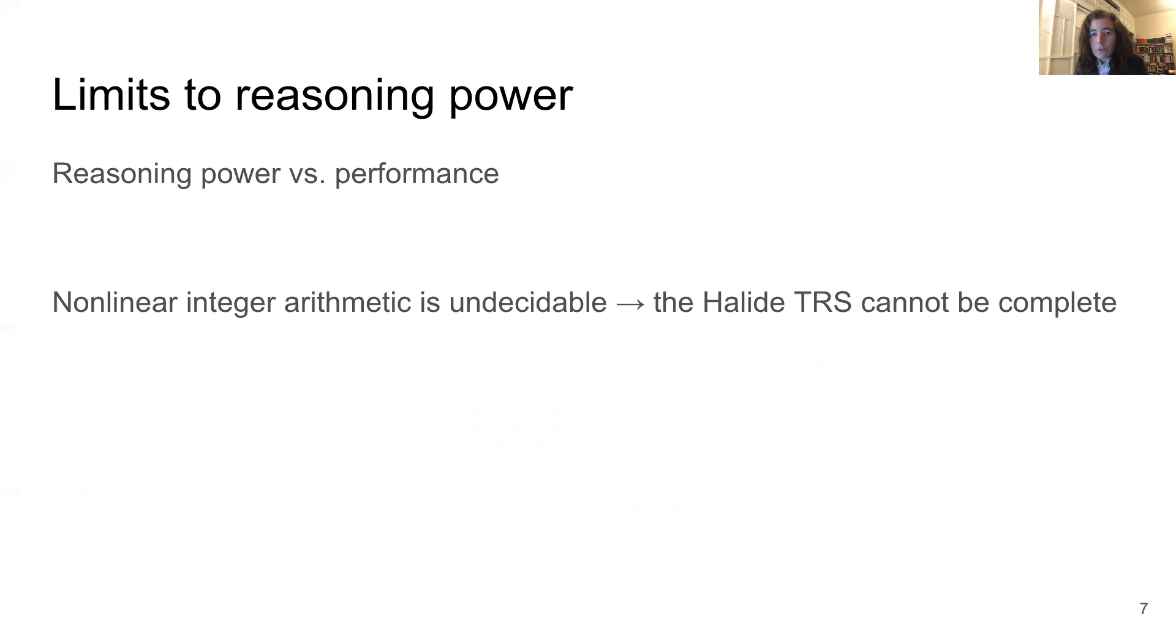Clearly we'd like our term rewriting system to be as powerful as possible, but we do have to work within some limitations. One is the performance requirements. The compiler calls the term rewriting system thousands of times per compilation. It needs to be very fast and use very little memory. I won't go into detail about this in this talk, but the need for performance informs a lot of the design decisions. The other barrier to reasoning power is that the Halide expression language is actually undecidable. The expression language works over infinite precision integers, and since it contains multiplication and division, expressions can be non-linear. Unfortunately, non-linear integer arithmetic is undecidable.